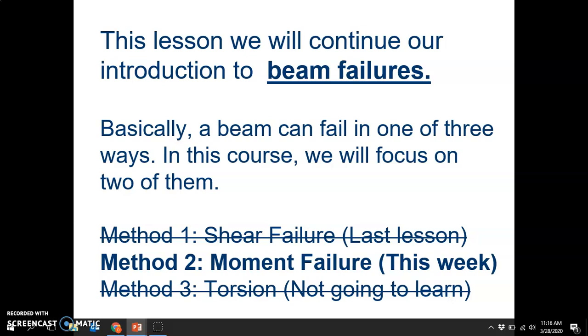This lesson we will continue our introduction to beam failures. Like I said last video, beams can fail in one of three ways. Last one we talked about shear failure, now we're going to talk about moment failure, and then the third one is torsion, which we're not going to learn. Once we know the maximum shear and the maximum moment, we will then look at actual beams with a specific size to it. Once you know what a beam's specific size is, you can determine the maximum shear or moment that beam can handle, and thus you can figure out which size beam you need.